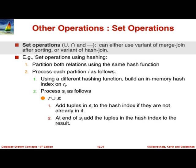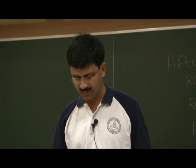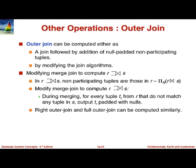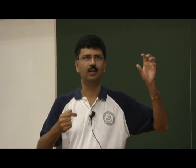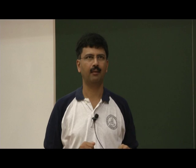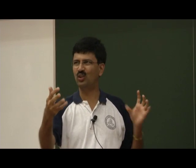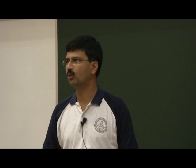Set operations like union and intersection are actually very similar to join — we can do merge or hashing. Outer join can be done by modifications of merge join: if a tuple matched at least one, no change; if it didn't match any and it is on the preserved side, output it with null. Merge join is very easy to extend to implement outer join.